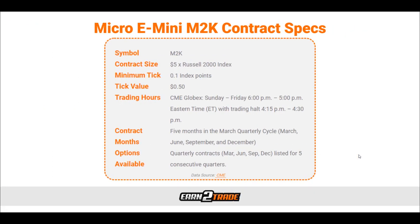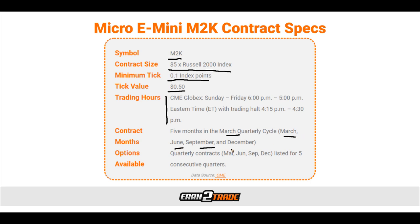Now let's take a look at the Micro E-mini contract — we don't want to discriminate based on size. The symbol for the Micro E-mini is M2K, which is how you find it on your asset finder. The contract size is $5 times the Russell 2000 index, one-tenth the size of the RTY. The minimum tick is 0.1 index points with a tick value of only 50 cents. Trading hours are exactly the same, with contract months in the quarterly cycle of March, June, September, and December. Options contracts are also March, June, September, and December, listed for five consecutive quarters.